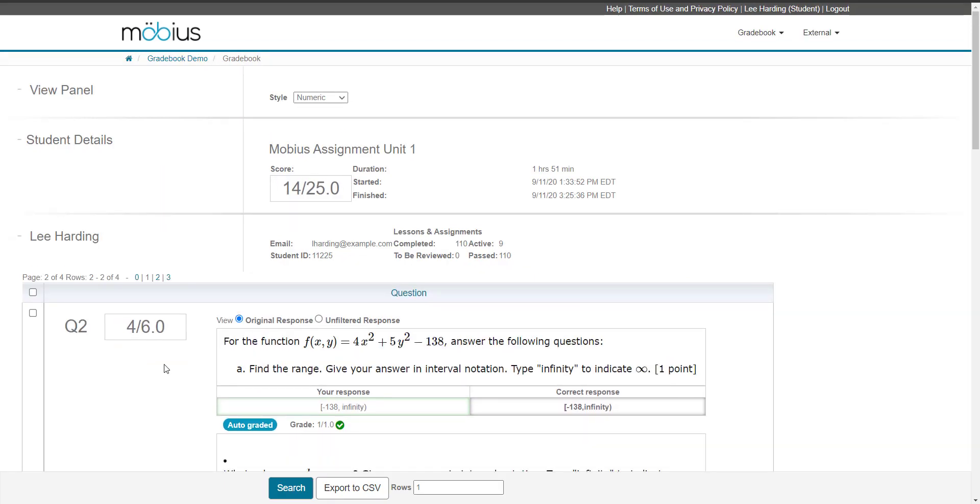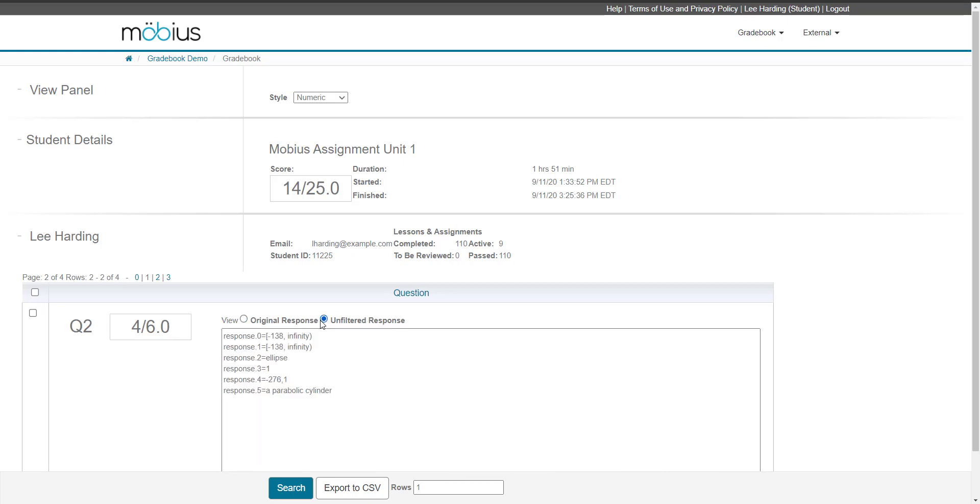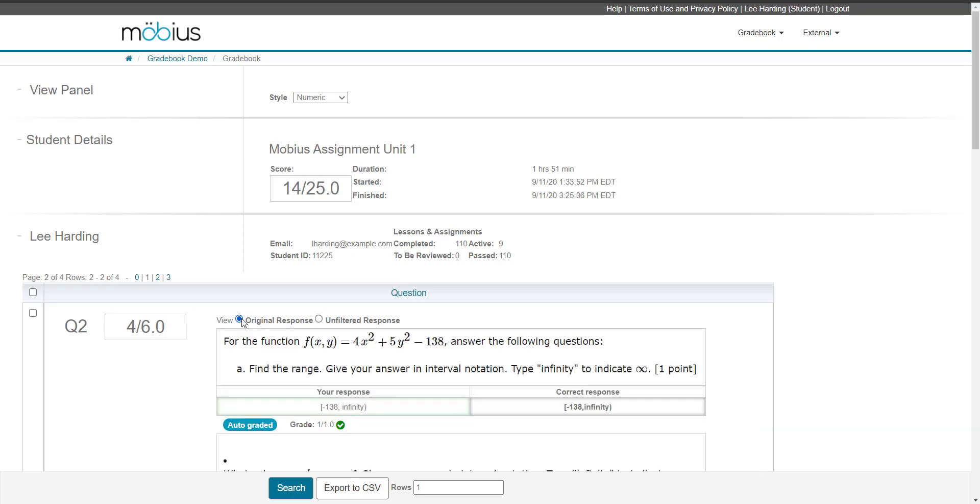Another thing that you can do when reviewing your response is select the unfiltered response radio button as shown here. By clicking this, and it's purely for your interest, it shows how your response is stored inside of the Mobius system. You can go back and select the original response to return to the default display, which shows how you entered your response.